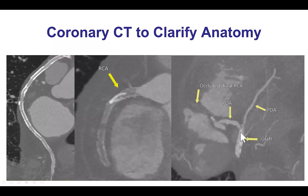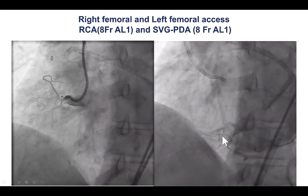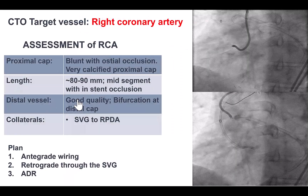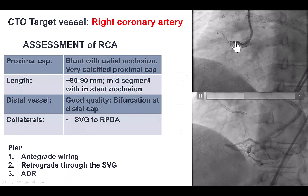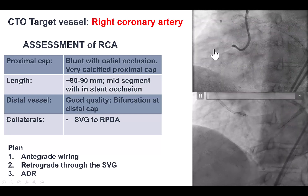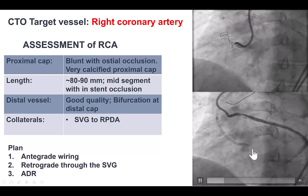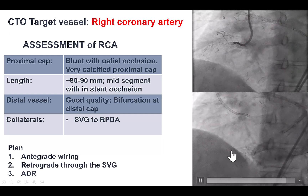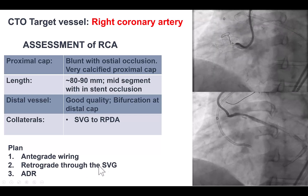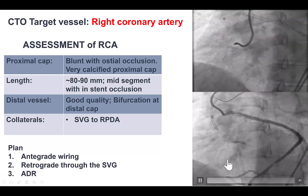There is the PDA that was supplied by the saphenous vein graft. A decision was made to proceed with PCI attempt. We engaged the right with an AL1 guide and the left with another AL1 guide, and decided to perform antegrade wire escalation as a first step because we did have some ostial segment of the RCA that was patent. The distal vessel was of good quality and large, but there was a bifurcation on the distal cap. We also had potential for retrograde through the saphenous vein graft. The first choice for crossing was antegrade wiring, followed by retrograde through the saphenous vein graft, or as a third option, ADR — the least preferred approach because of the bifurcation at the distal cap.